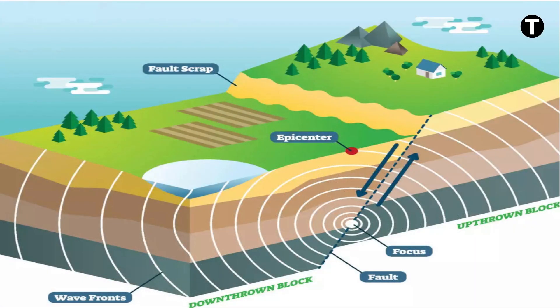Now let's explore the main features of an earthquake. The hypocenter, also called the focus, is the point of origin within the Earth, while the epicenter is directly above it on the surface. Seismic waves radiate outward from the hypocenter, causing ground movement.